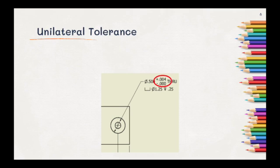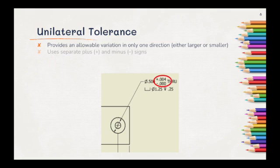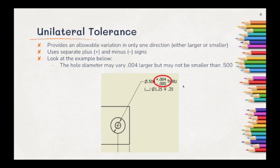Now let's take a look at a unilateral tolerance. Unilateral tolerances provide an allowable variation in only one direction, either larger or smaller. They use separate plus or minus signs to indicate which direction is allowed. Looking at the example below, you can see that our base measurement, 0.500, can be 0.004 over, but it cannot be smaller. The hole diameter may vary 0.004 larger, but may not be smaller.